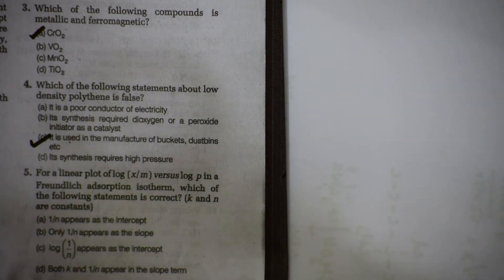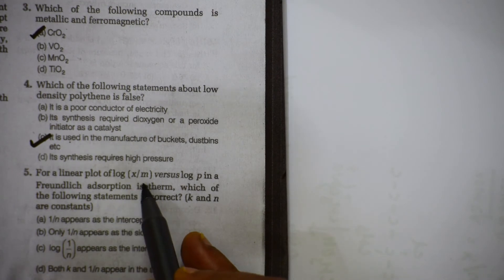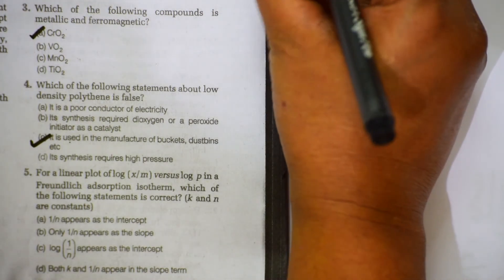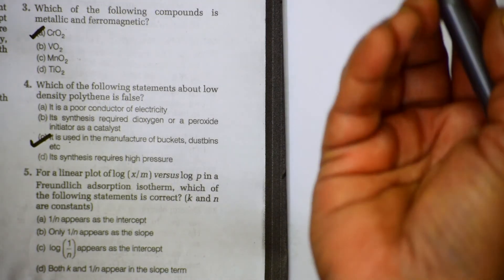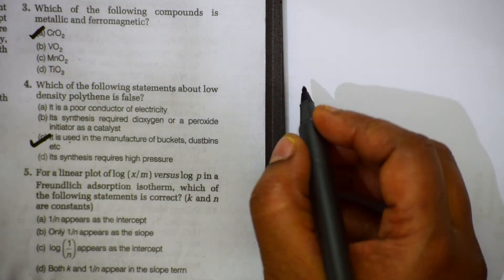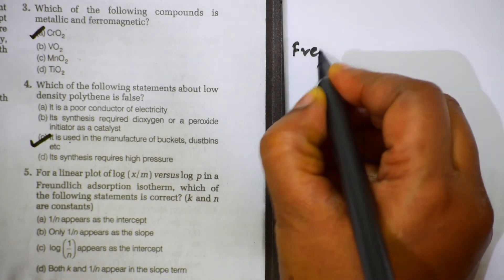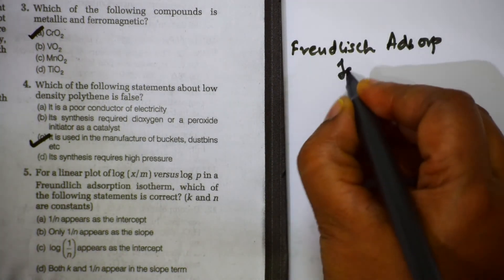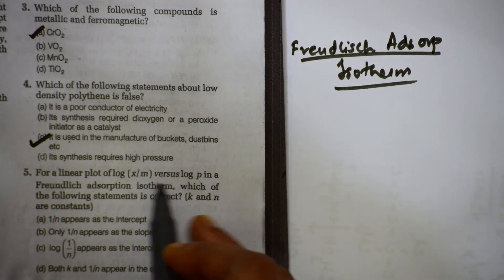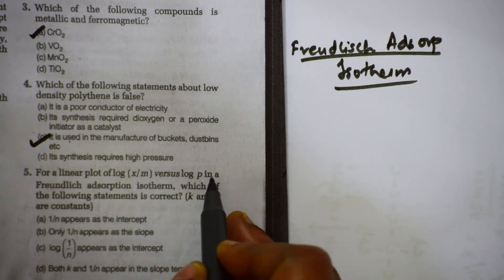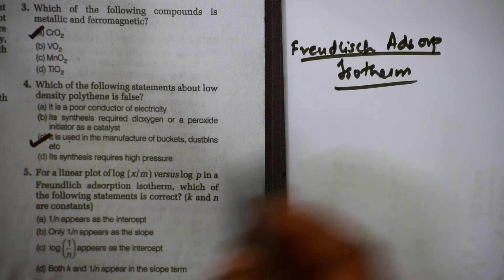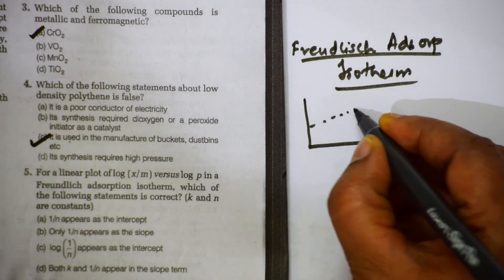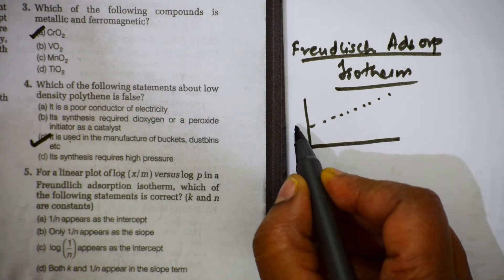Question 5: for a linear plot of log(x/m) — you learned this in Freundlich adsorption isotherm. They've asked: you've drawn a plot of log(x/m) versus log P in Freundlich adsorption isotherm and got a linear plot. Which of the following statements is correct? So log(x/m) is on the y-axis and log P is on the x-axis.